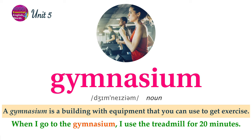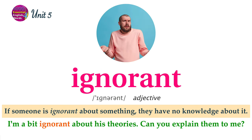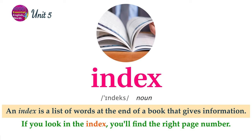To highlight something means to mark it with a color so that it is easy to see. I read my vocabulary list and highlighted the most difficult words. If someone is ignorant about something, they have no knowledge about it. I'm a bit ignorant about his theories. Can you explain them to me? An index is a list of words at the end of a book that gives information. If you look in the index, you'll find the right page number.